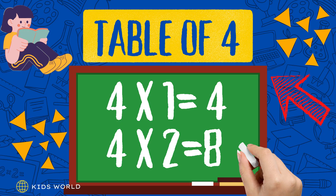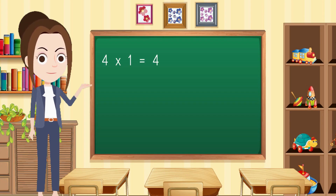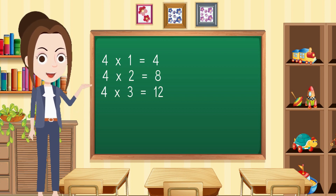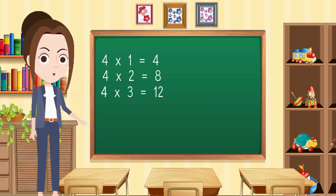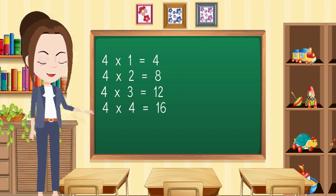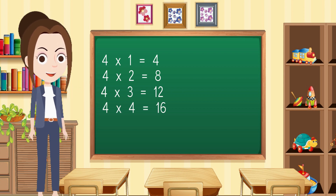Table of 4. 4 1s are 4, 4 2s are 8, 4 3s are 12, 4 4s are 16, 4 5s are 20,